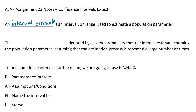The level of confidence, which we're going to denote by C, is the probability that the interval estimate contains the population parameter, assuming that the estimation process is repeated a large number of times. So the level of confidence says, for example, that I'm 90% sure that our population parameter is somewhere within this interval. The goal today is to find confidence intervals — meaning an interval in which we're 90%, 95%, or whatever percent sure the population parameter is within it.